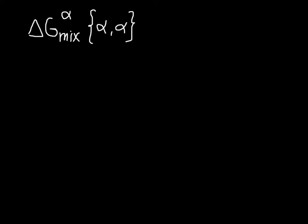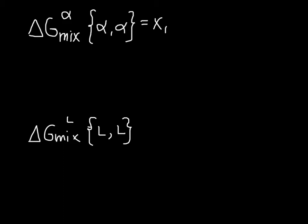This notation shows the reference state for component one and component two. Similarly, for delta G mixing in the liquid, we assumed the reference state for component one was the liquid and for component two was the liquid. So we can write an expression where delta G mix equals the mole fraction of component one in the alpha phase times delta mu one in the alpha phase, plus the same for component two. This is the compositionally weighted sum of the partial molar properties.